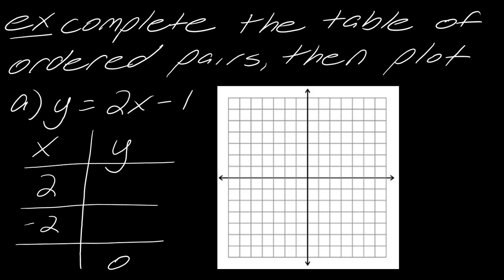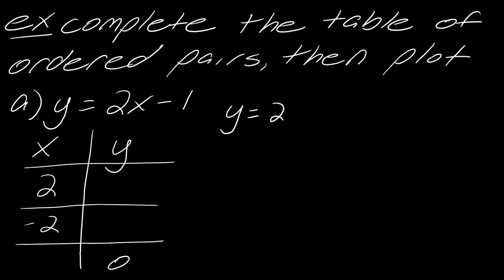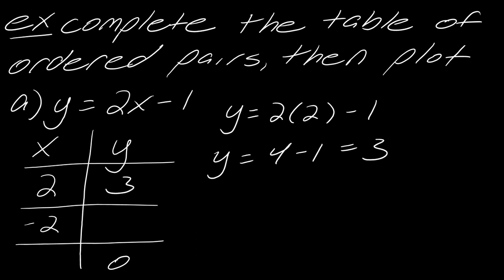Let's get rid of the graph for a second so we can focus on the table. We want to come up with three ordered pairs, and we're given either the x or the y coordinate to fill in the table. Starting with the first one, I'm going to plug 2 in for x. So I get y = 2(2) − 1, which gives 4 − 1, so y = 3. I'll put a 3 right there in the table.